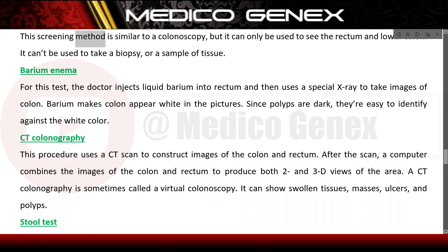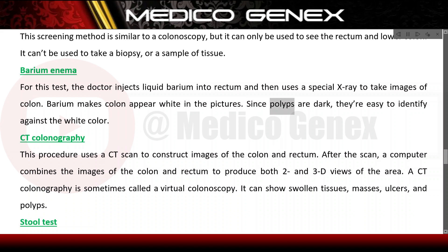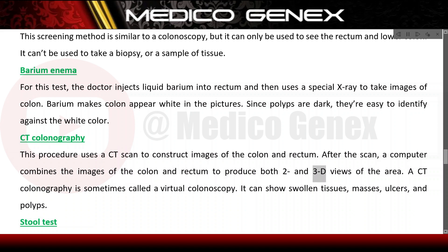Sigmoidoscopy: this screening method is similar to a colonoscopy, but it can only be used to see the rectum and lower colon, and cannot be used to take a biopsy or tissue sample. Barium enema: the doctor injects liquid barium into the rectum and uses a special X-ray to take images of the colon. Barium makes the colon appear white in the pictures, and since polyps are dark, they are easy to identify. CT colonography: this procedure uses a CT scan to construct images of the colon and rectum, and a computer combines the images to produce both 2D and 3D views of the area.